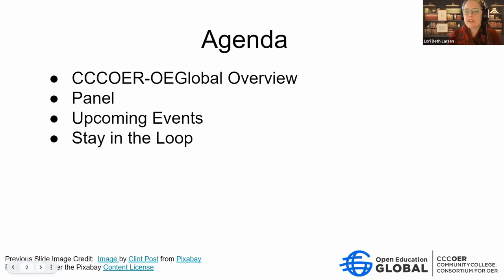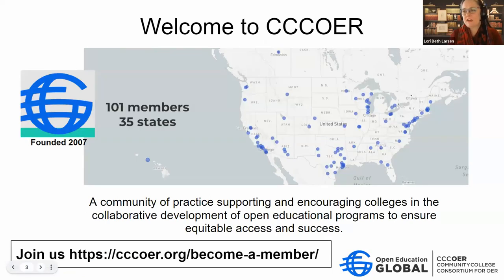Our agenda today includes a quick overview of CCC OER and OE Global, a panel of experts sharing their stories about open course markings for open education, and information about upcoming events. CCC OER is a community of practice with monthly webinars and various committees to encourage colleges to collaborate on open education programs, ensuring equitable access and success. We have about 101 members from 35 different states.